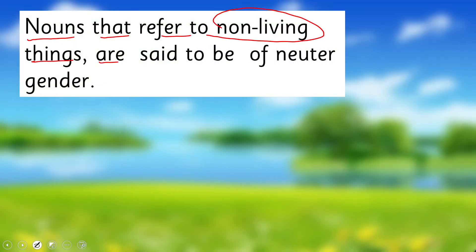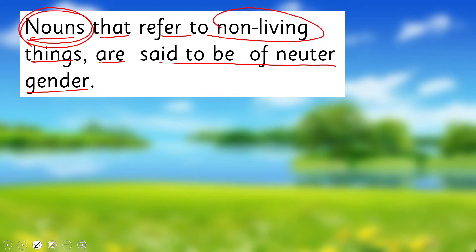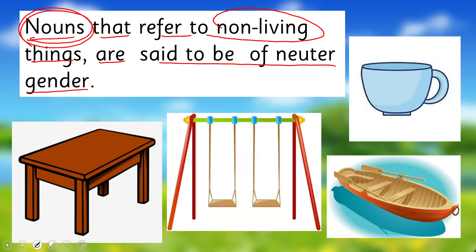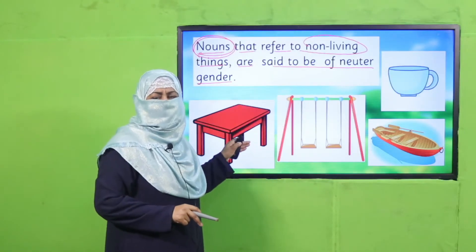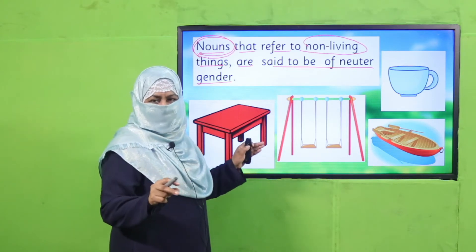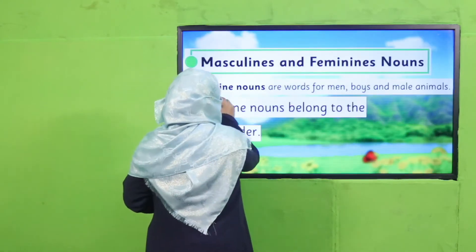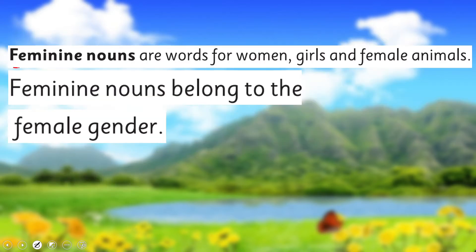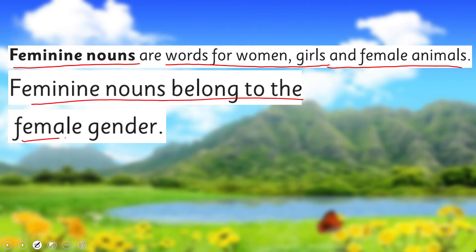Nouns that refer to non-living things are said to be of neuter gender — they have neither male nor female gender. Examples are: table, swing, cup, and boat. They don't have gender, so they are neuter gender nouns. To summarize: masculine nouns are words for men, boys, and male animals and belong to the male gender. Feminine nouns are words for women, girls, and female animals and belong to the female gender.